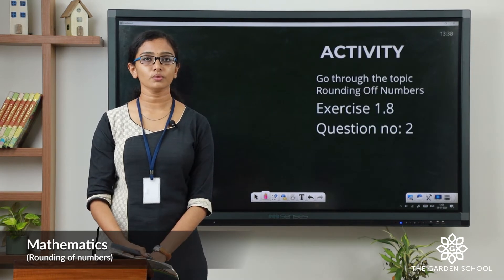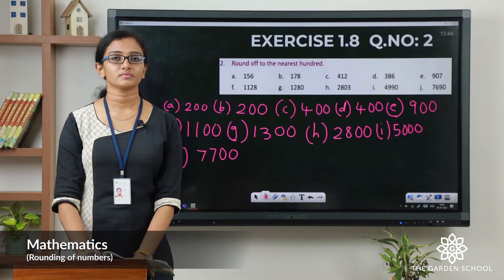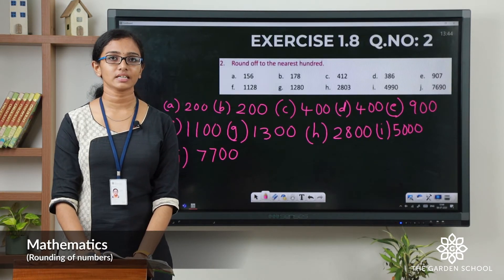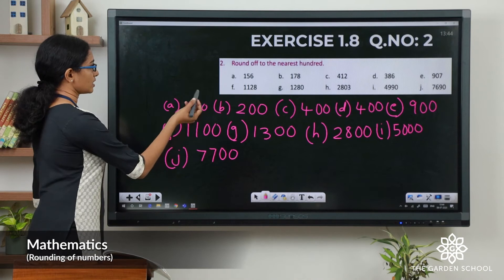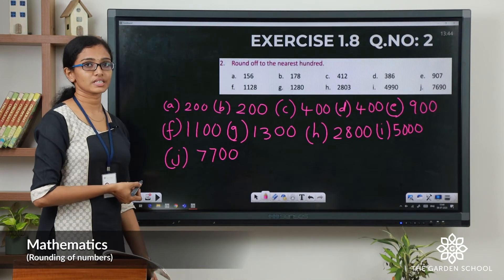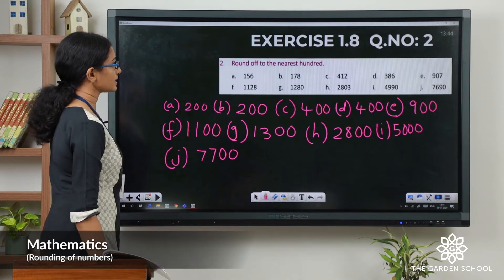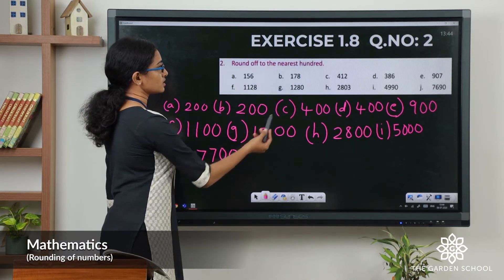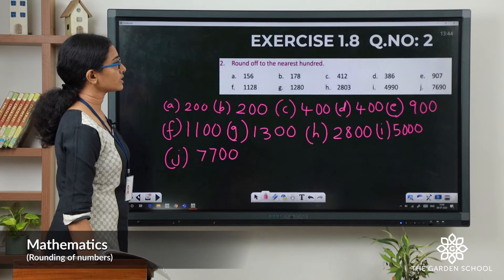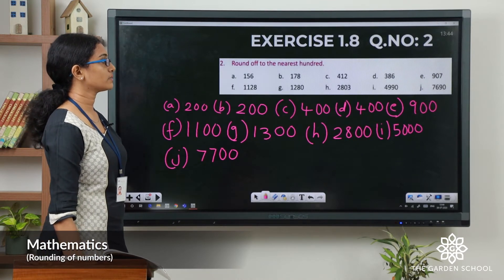Now let us do question number 2. You can pause the video, finish the exercise and come back. I hope you have finished that question. Now let us check the answers. Question A: 156 rounded off to the nearest 100 will give you 200. 178 gives 200. 412 will give you 400. 386 rounded off will give you 400.